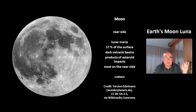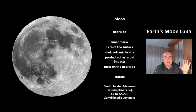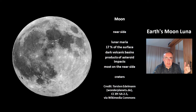This is the near side of the Moon. You can see these dark areas — they are called Lunar Maria, making up 70% of the surface. These are dark volcanic basins, products of asteroid impacts that were then covered with lava. Most of the Lunar Maria are on the near side.